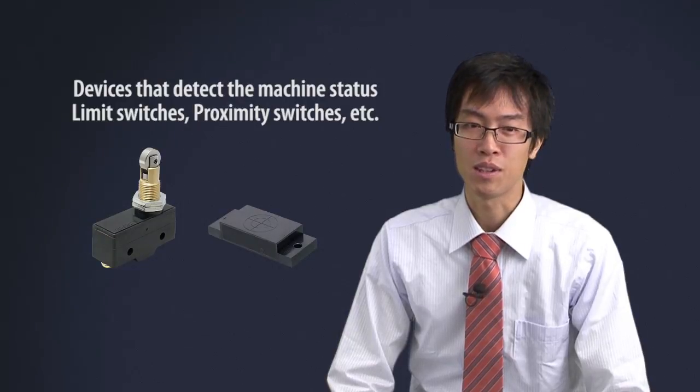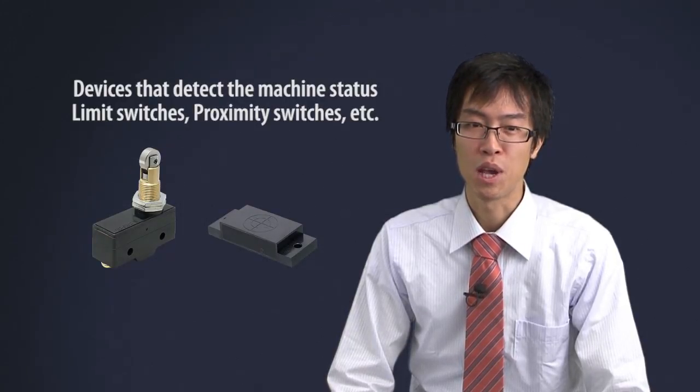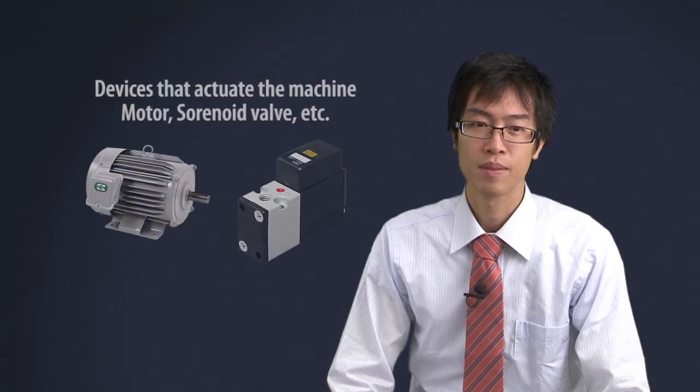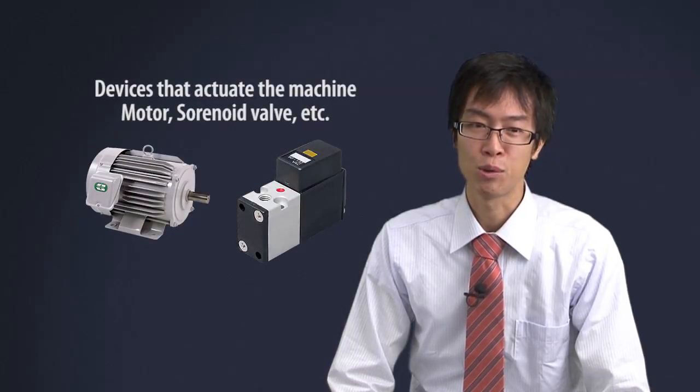Devices that detect the machine status, like limit switches and proximity switches. And devices that actuate the machine, like motors and solenoid valves.